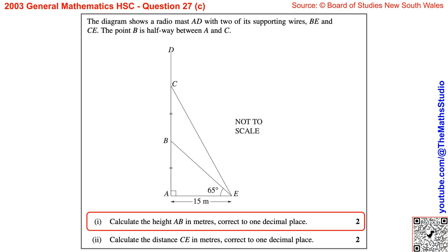Part 1. Calculate the height AB in meters, correct to one decimal place.